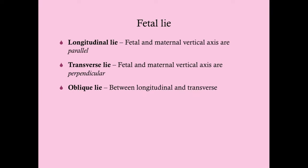Fetal lie refers to the relationship between the fetal vertical axis and the maternal vertical axis. The vertical axis is a line drawn from your head to the floor. We want those axes to be parallel — we want the head to be coming out of the cervix, toward the floor if mom is standing up. That is what we want: the vertical axes of mom and baby to be parallel.